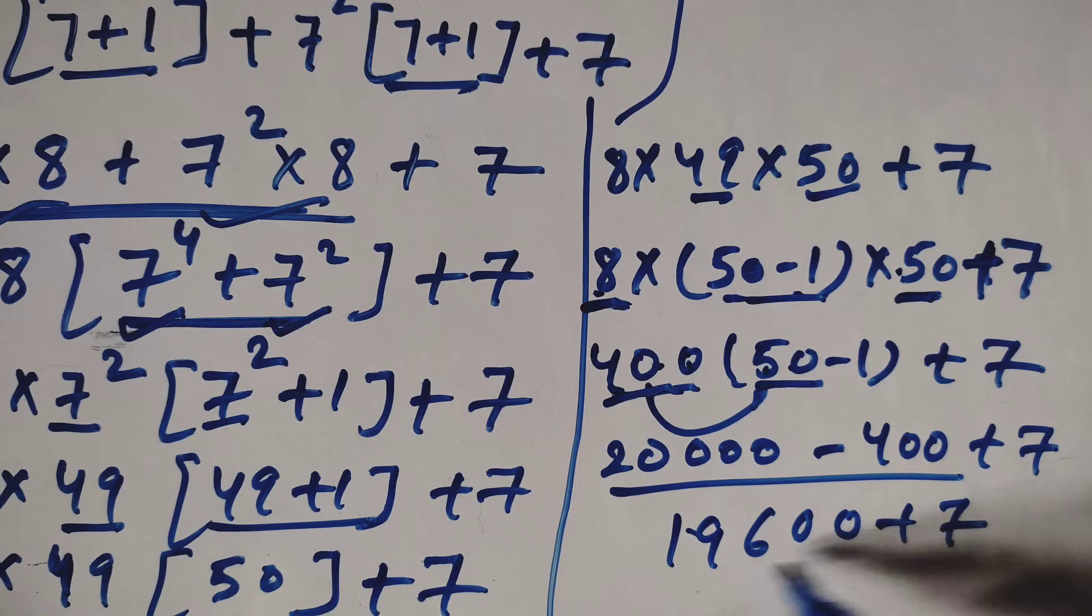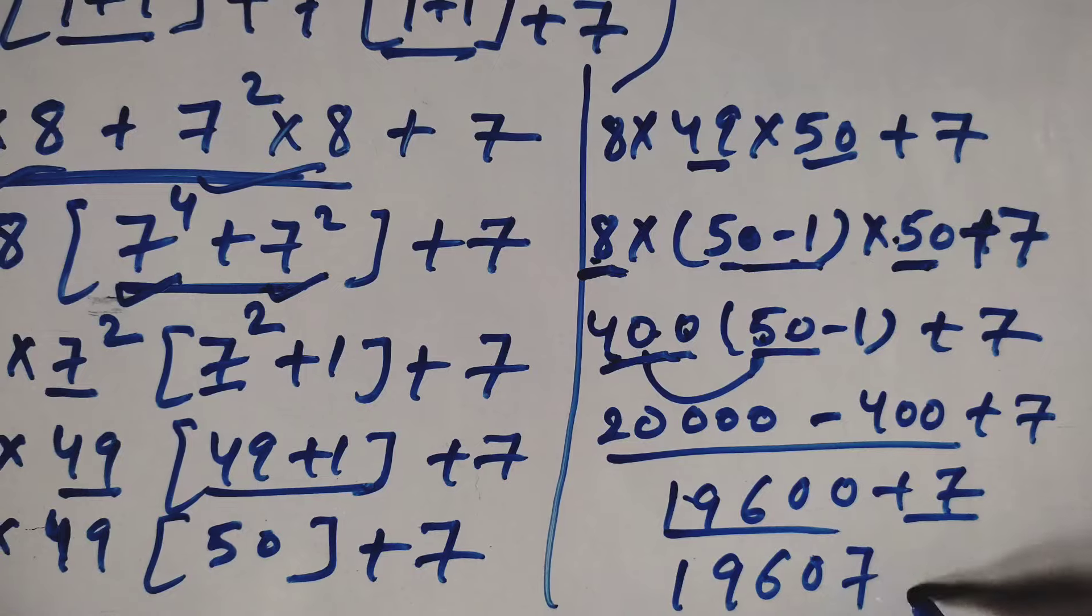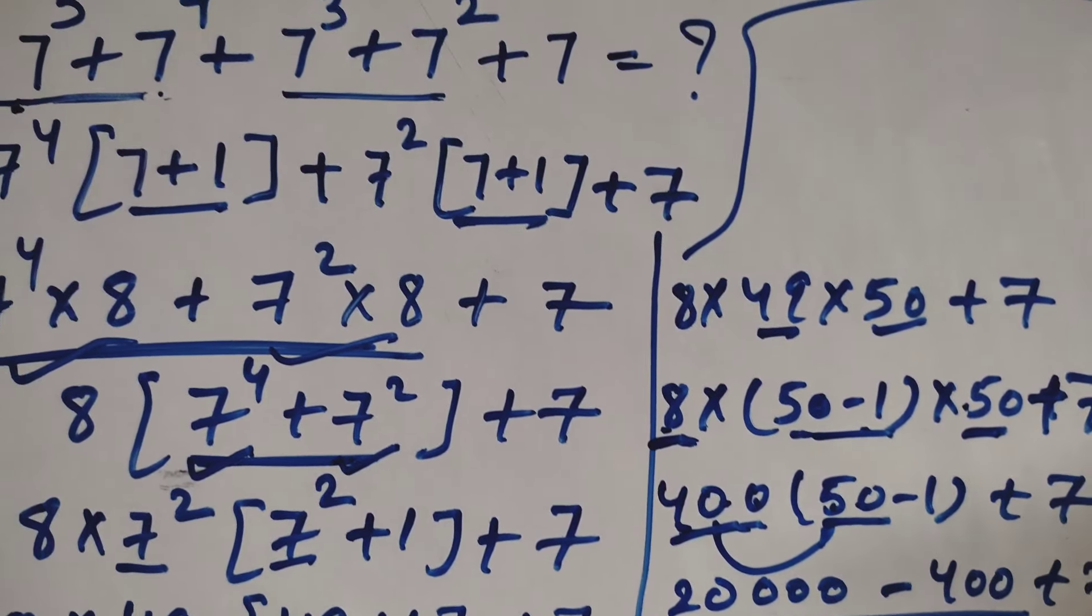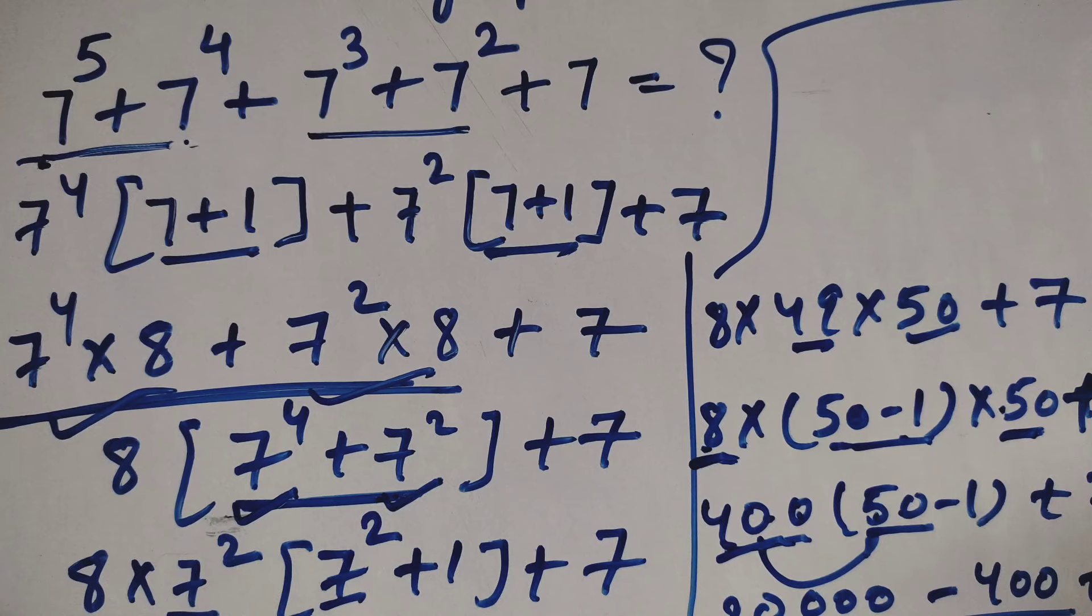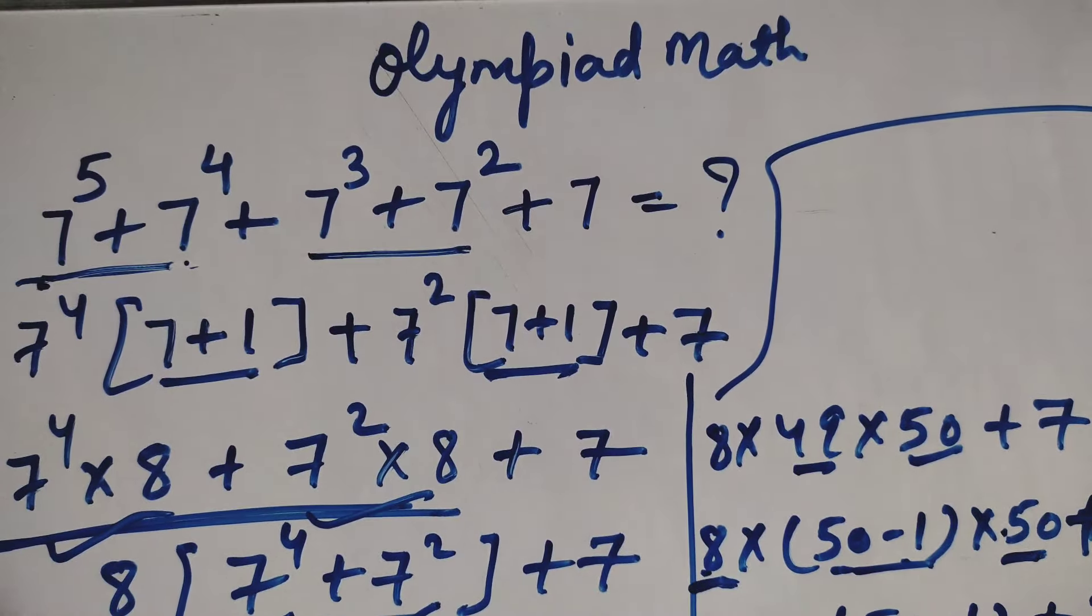Now multiply it: 400 into 50 is 20,000 minus 400 gives 19,600 plus 7. If you add these two terms, we get 19,607. This is our answer.